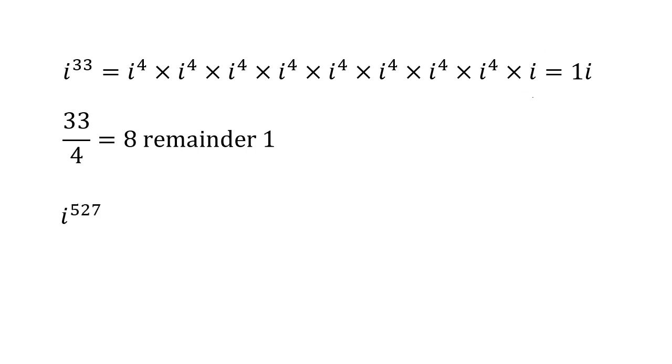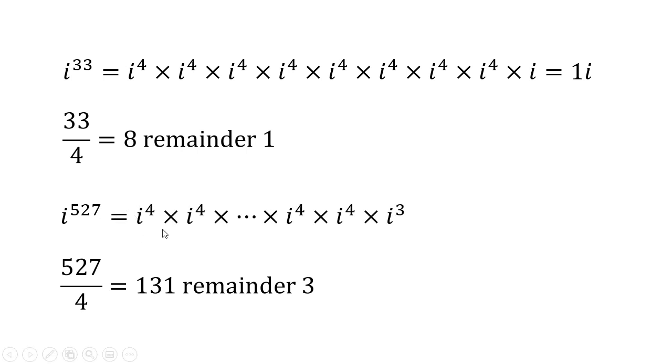Another example: i to the five hundred twenty-seven. Five hundred twenty-seven divided by four is one hundred thirty-one remainder three. So we have i to the four multiplied together 131 times, but each of these is just one, works out to be one. And then we're left with i cubed. So what we get at the end, i cubed as we saw on the previous slide is minus one i. That is the answer at the end because all of these are just multiplying by one.